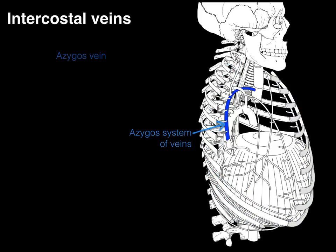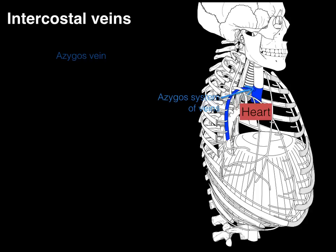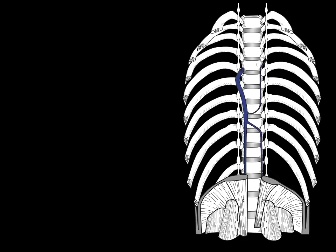Let's talk about them in more detail. The azygous system of veins — the azygous vein courses up, then goes over the right primary bronchus and dumps into the superior vena cava, and then blood dumps down into the heart. That's how we get blood from the right intercostal spaces on the back into the heart. Now turning from a lateral view to an anterior view: vertically on the right side is the azygous vein; vertically on the left side is the hemiazygous vein at the bottom and the accessory hemiazygous vein at the top.